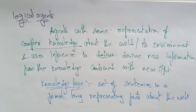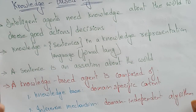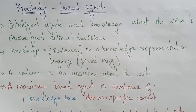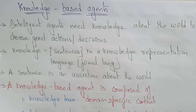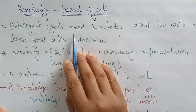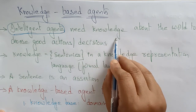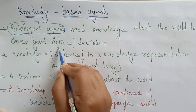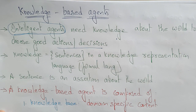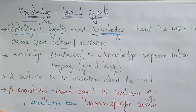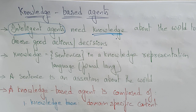Now let's see what knowledge-based agents are. An intelligent agent needs knowledge about the world to choose good actions or decisions. Knowledge is simply a sentence — it represents things in a formal language. A sentence is an assertion about the world.